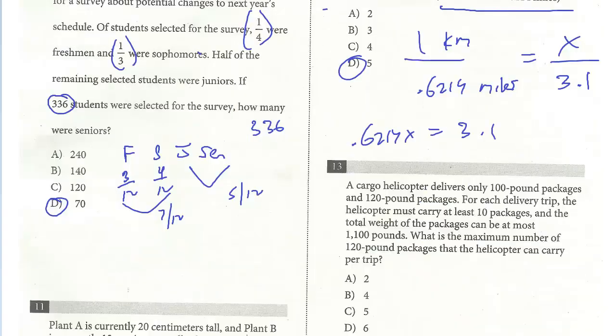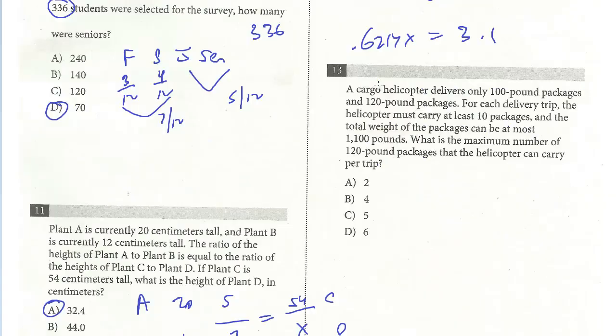Last question on this page, number 13. A cargo helicopter delivers only 100-pound packages and 120-pound packages for each delivery trip. The helicopter must carry at least 10 packages, and the total weight of the packages can be at most 1,100 pounds. What is the maximum number of 120-pound packages the helicopter can carry per trip? This is a lot like a system of equations, but it's actually an inequality because we see these terms at least and at most.